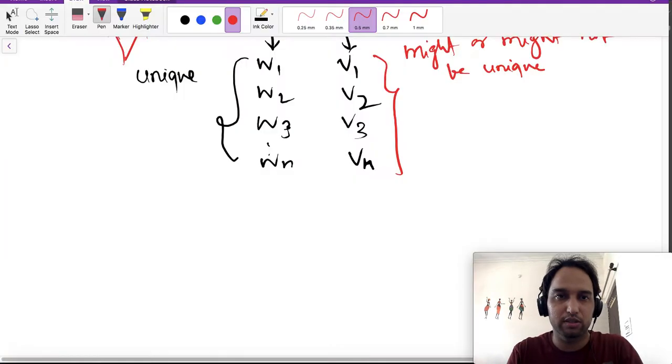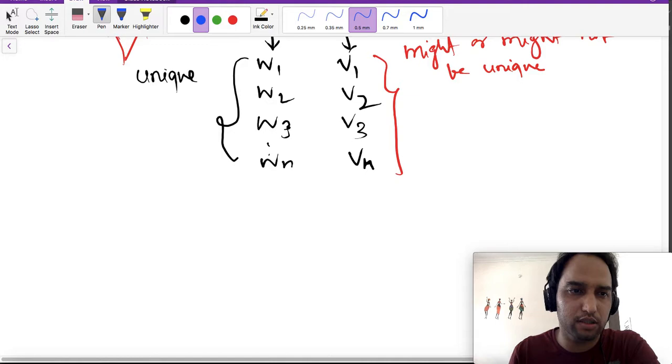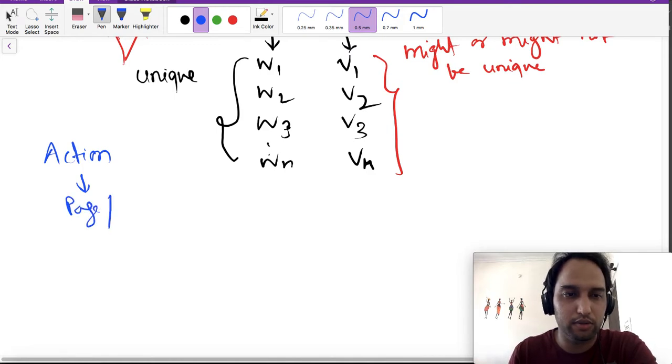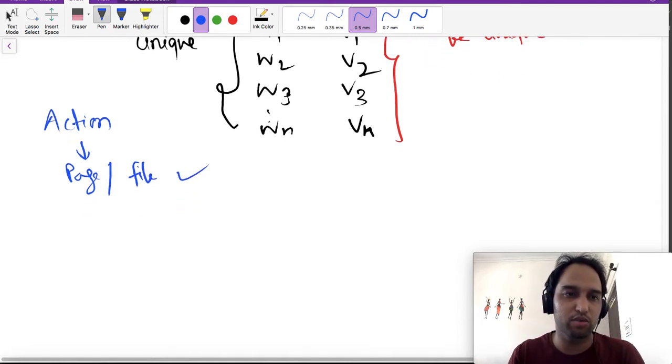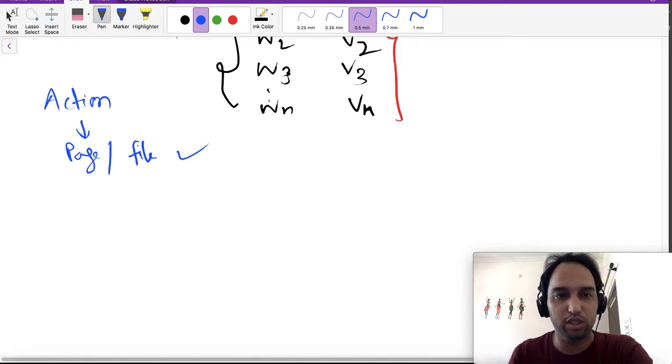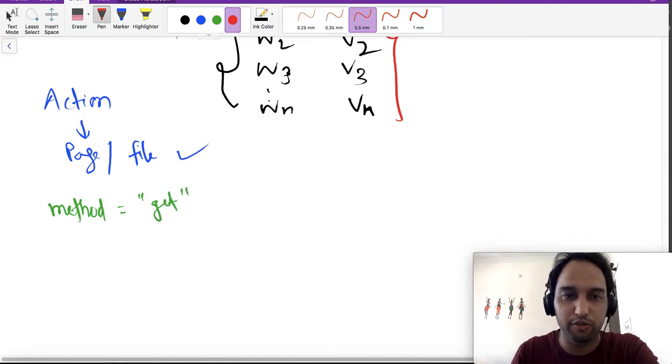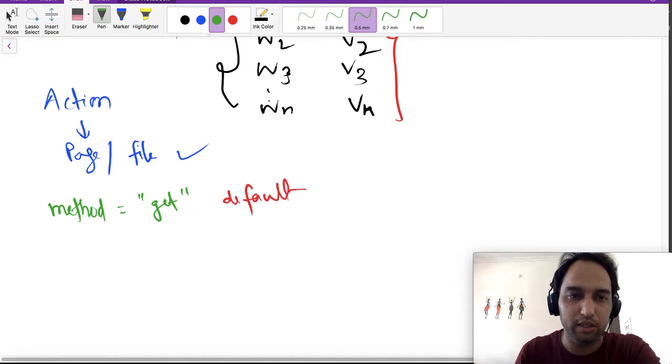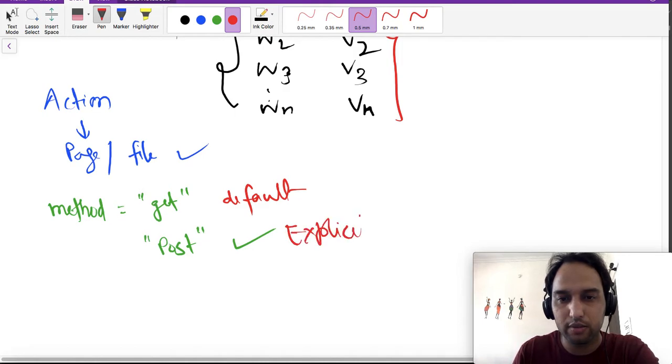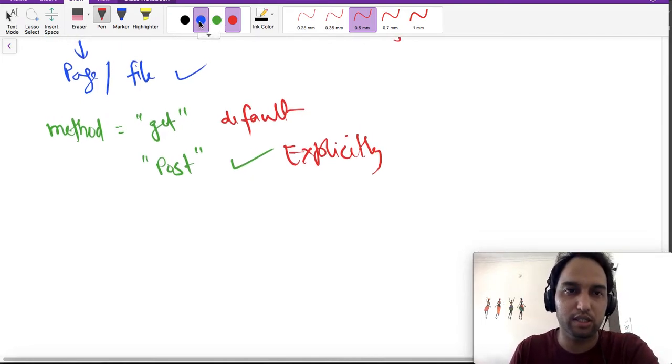Now let's come to another attribute - one is action and another is method. When we are talking about action, that means we are telling about the page or file to which we are going to submit the data. In case you omit this action attribute, that means we are going to submit the data to the current page on which we have coded that form. Now come to the method attribute, and there could be a GET method which is the default one, or there could be POST method which we have to write explicitly.